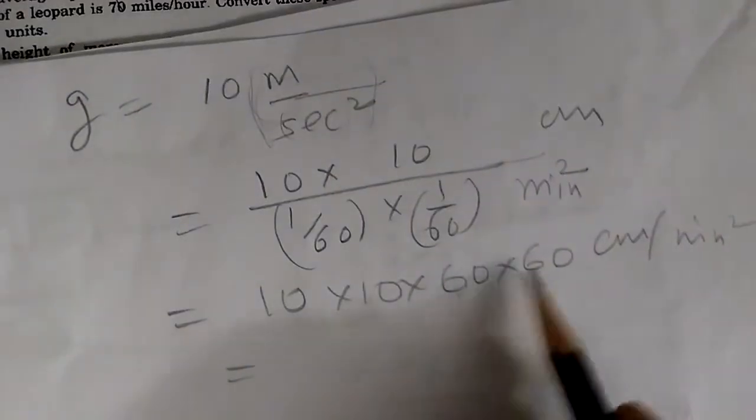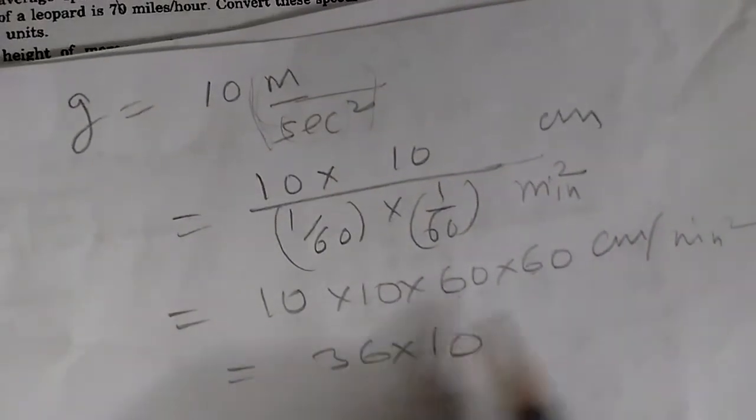And this becomes 6 into 6, 36 into 10 to the power of 1, 2, 3, 4. Sorry, 1 meter is 100 centimeter.